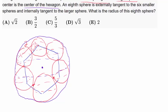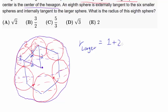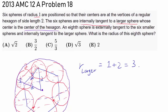The radius of the purple sphere is found by drawing a line from its center to the tangent point on one of the small spheres. The side length of the hexagon is 2, giving us an equilateral triangle where that distance is 2. Adding the radius of the smaller sphere, which is 1, the radius of the larger sphere is 2 plus 1, which equals 3.